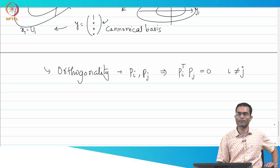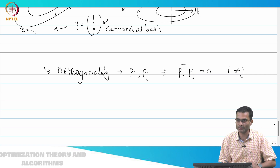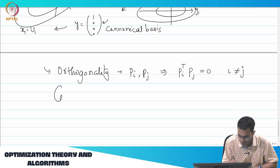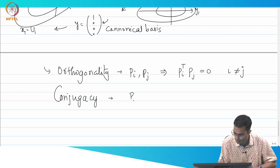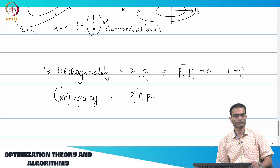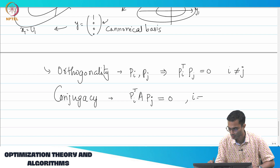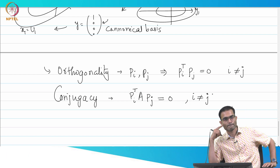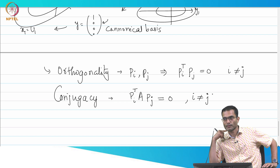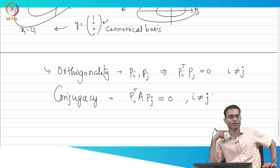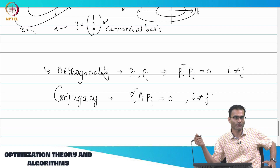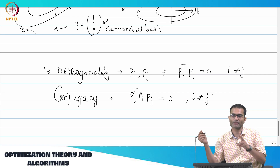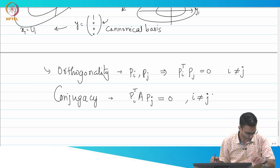Very similar to this property is a property called conjugacy. The first C in the name 'conjugate gradient' — what does conjugate mean? Conjugacy simply means that Pi transpose A Pj is equal to 0 for all i different from j. Then we say that vectors Pi and Pj are A-conjugate with respect to each other.